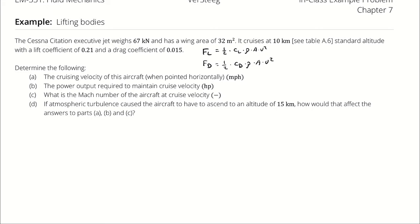I want us to determine the cruising velocity of this aircraft when pointed horizontally in miles per hour, the power output required to maintain cruise velocity, the Mach number of the aircraft at cruise velocity, and if atmospheric turbulence caused the aircraft to ascend to 15 kilometers, how would that affect the answers to A, B, and C?